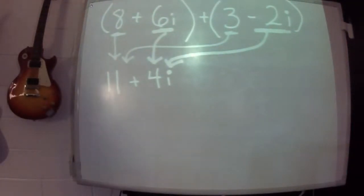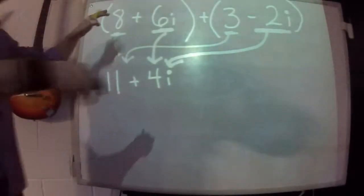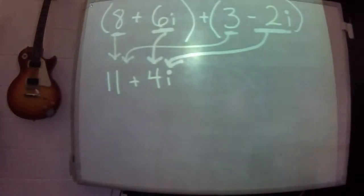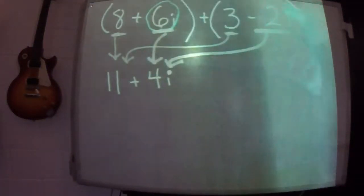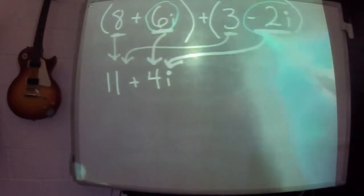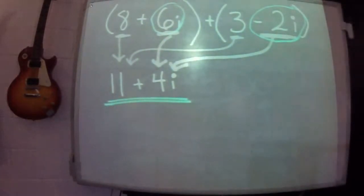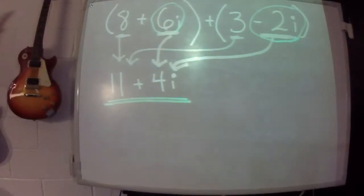Well, really, it's just like adding like terms, like what we did back in algebra one. Add the real parts. Add the eight and the three, and you get eleven. Then add the imaginary parts. Add the six i plus negative two i, or six i minus two i. And that's where you get four i. And it's not that hard.